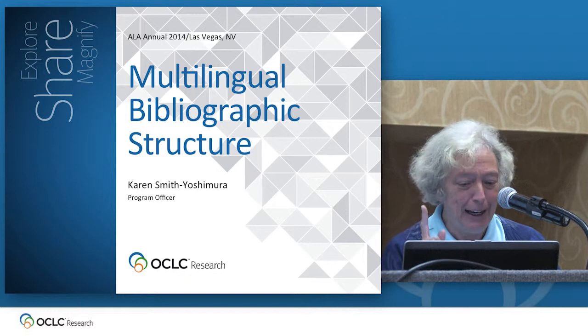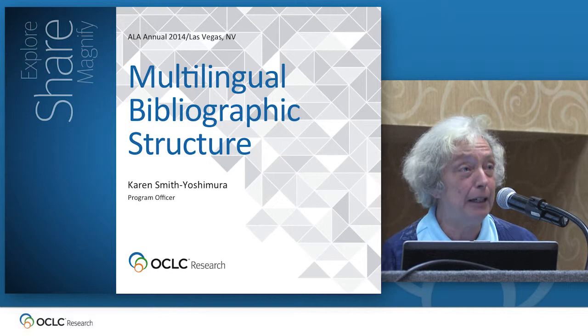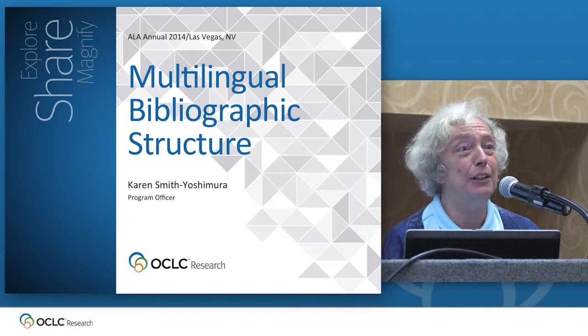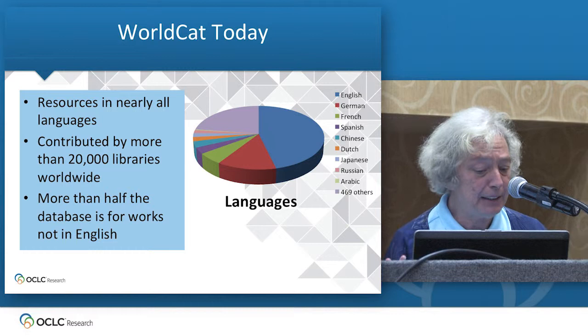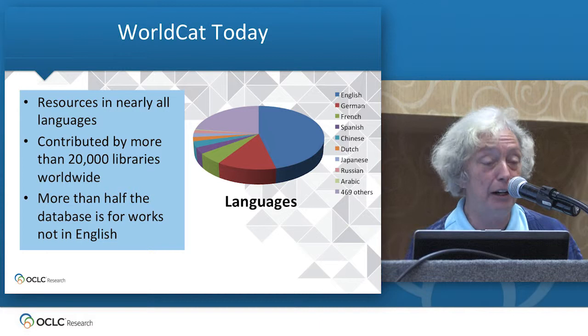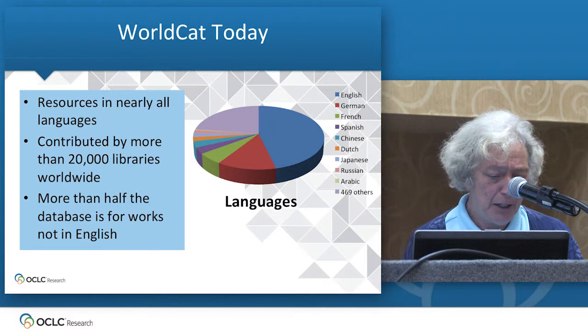Its primary goal is to make it possible to present bibliographic information in the preferred language and script of the reader. The project seeks to leverage the multilingual content of WorldCat. There are now more than 300 million records in WorldCat, representing the holdings of the world's libraries. Of the 300 million, more than half are in languages other than English.